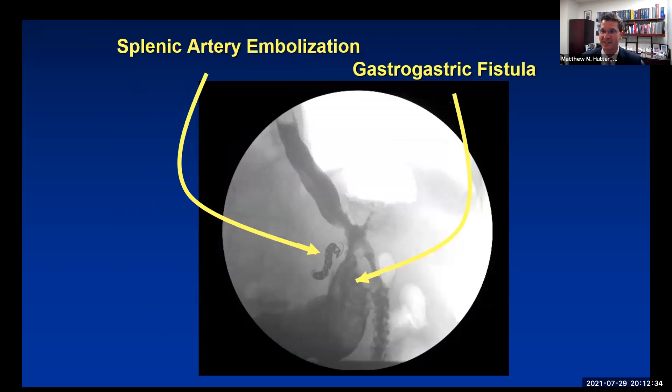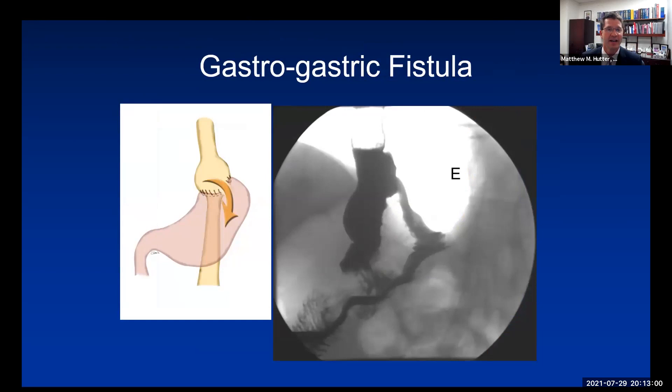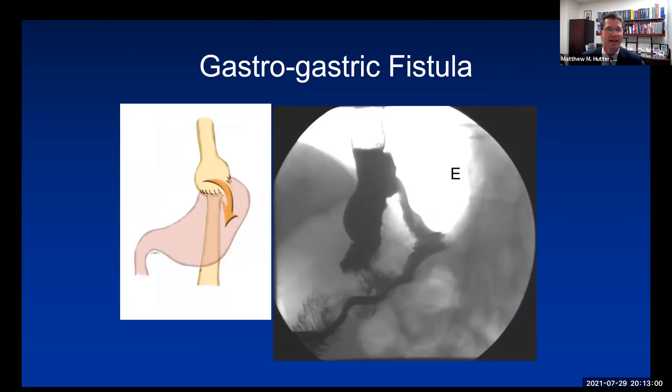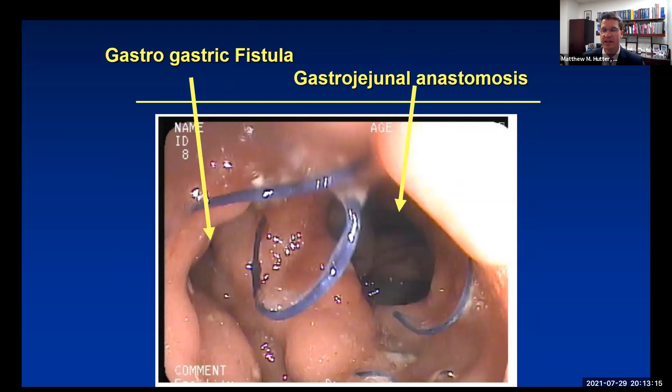All ulcers are not the same. When thinking anatomically about the gastro-jejunal anastomosis, right on its posterior wall sits the splenic artery and splenic vein. If you erode posteriorly, that explains the catastrophic bleed. A gastro-gastric fistula presents a different approach and a different problem. These can also be hard to see endoscopically—you need a high level of suspicion, as opposed to a gastro-jejunal anastomosis ulcer.